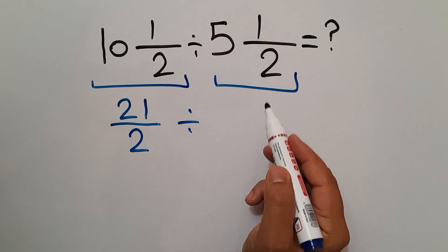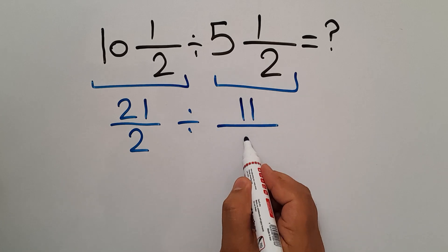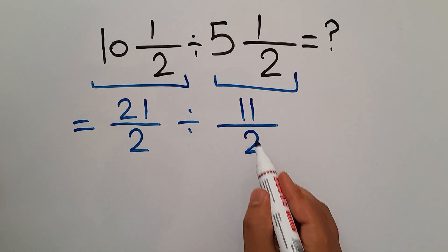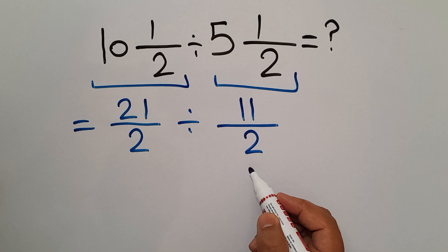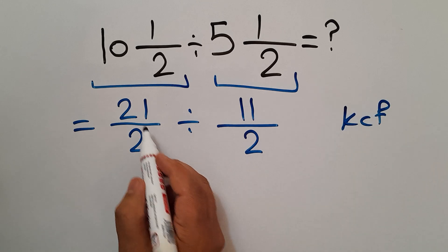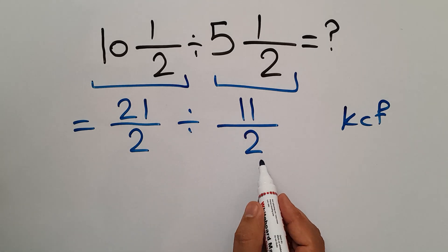Okay, now we have 21 over 2 divided by 11 over 2. Now according to the KCF rule: keep the first fraction, change the division to multiplication, and flip the second fraction.